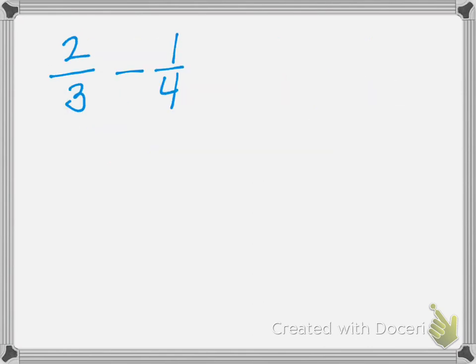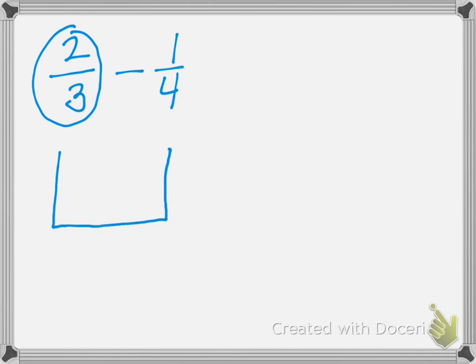Here we have 2 thirds minus 1 fourth. The first thing to do is to draw the first number in the subtraction problem. We're going to draw vertical lines for thirds and color in 2 of those.